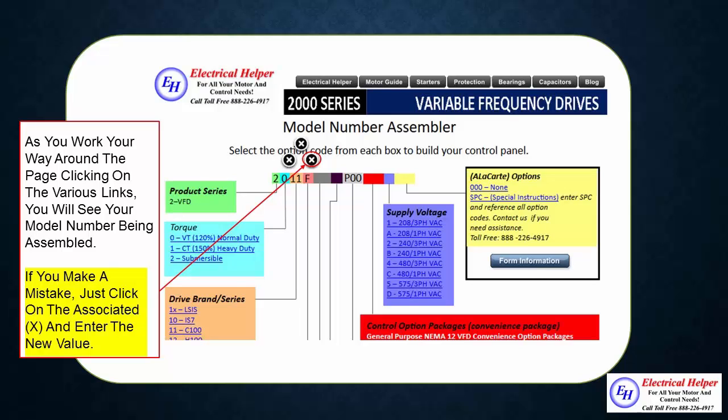You must notice that as the model number is being formulated black circled X's will appear by the section you are working on. If a mistake is made just click on the associated X and enter the correct selection.